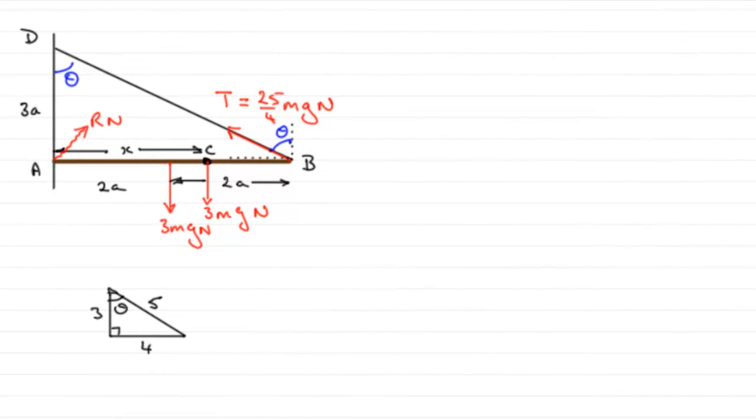Now for this next part we've got to show that the horizontal component of the force exerted by the wall on the rod has magnitude 5mg. In the previous part I said that the contact force from the wall was R Newtons, that was the force acting on the rod AB.